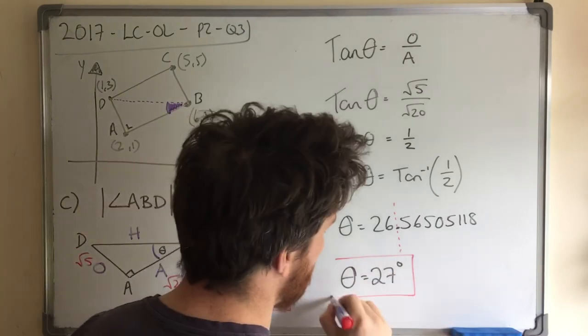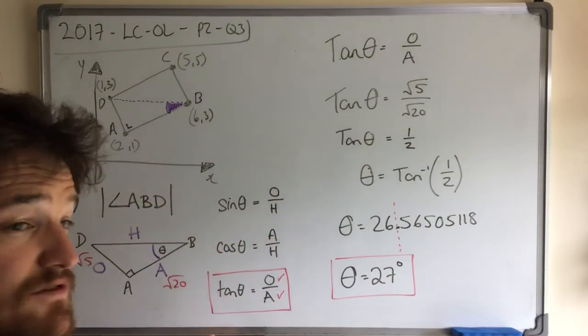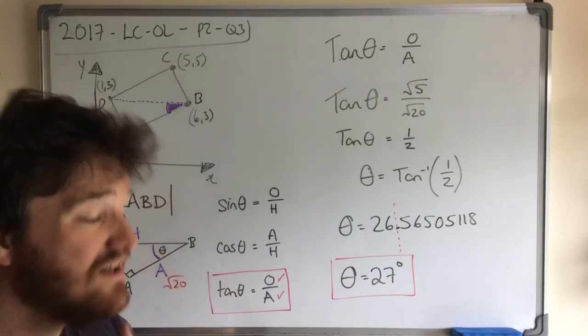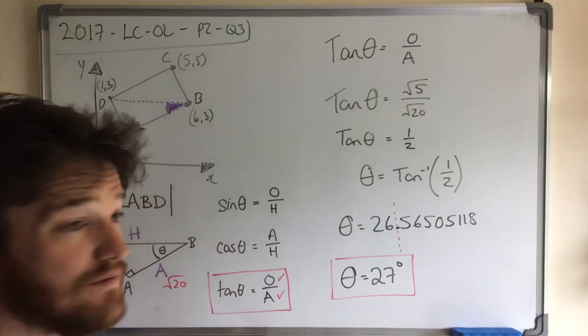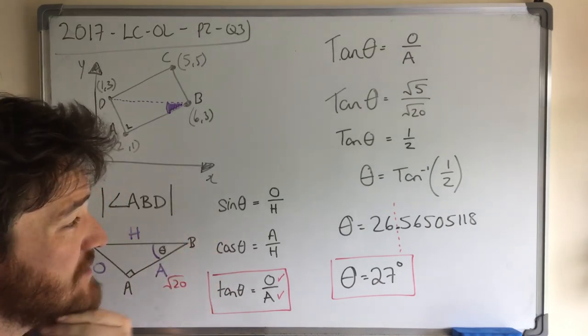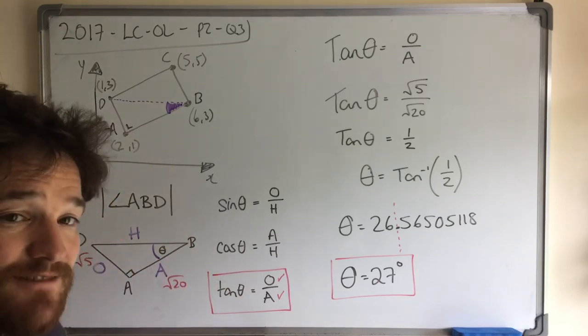So have we used trigonometry? You betcha, because trigonometry is using sine, cos, and tan generally. Or you could also use the sine rule and the cosine rule. I don't know why you would make it really hard. It's easier to use sine, cos, and tan. But you're using trigonometry in that case to find the angle ABD. That's it.